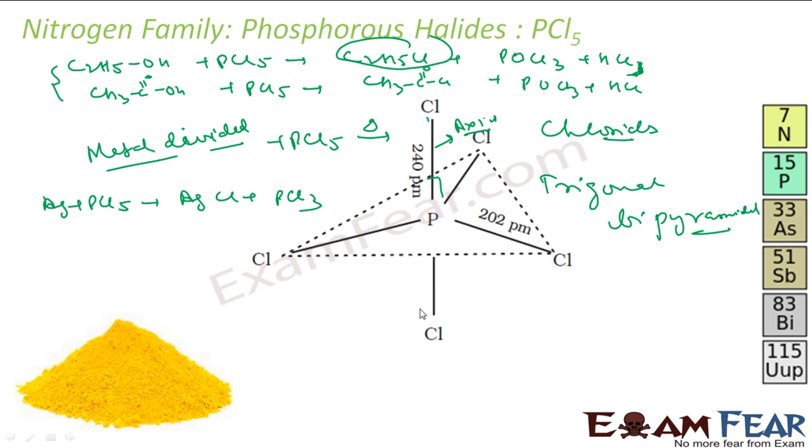Also, in solid state it exists as ionic form. For example, PCl5 will exist as PCl4+ and PCl6-. This will be tetrahedral and this will be octahedral. So it exists as ionic solids also - this tetrahedral here and this is octahedral shape.